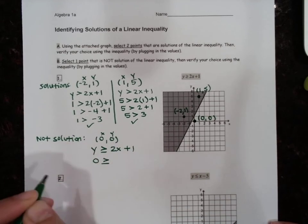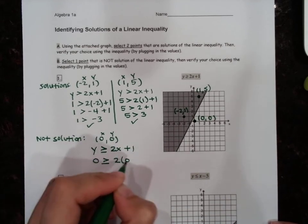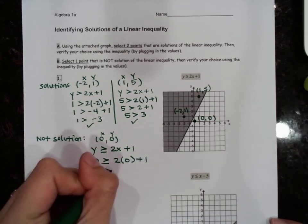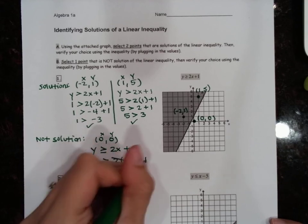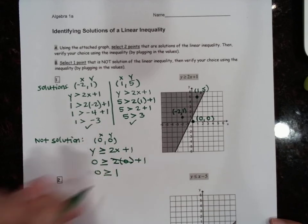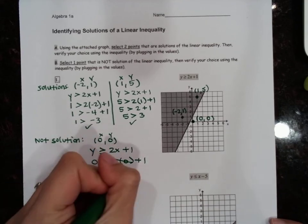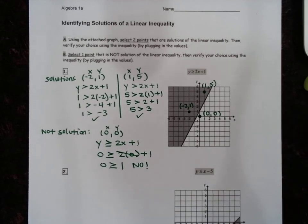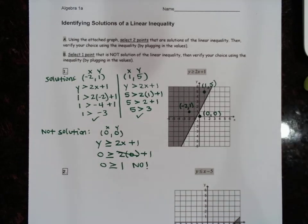Is 0 greater than or equal to 2 times 0 plus 1? We have 0, is it greater than or equal to 2 times 0, which is just 0, plus 1? So is 0 greater than or equal to 1? No. That's not true, and that's why it is not a solution. Okay, go ahead and complete your assignment.